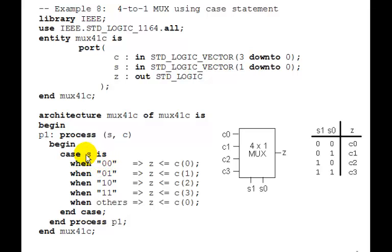When 0,0 means when S is 0,0. Notice these are strings, so we have to have double quotes. If it's just a single bit, remember it was single quotes.